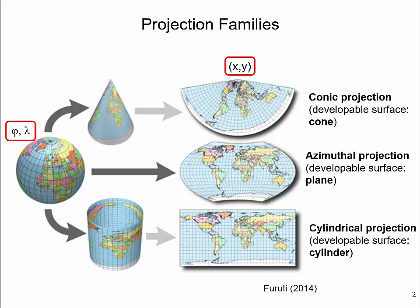Correspondingly, projection families can be grouped into conic, azimuthal, or cylindrical. Dark grey arrows in this figure indicate coordinate transformations that introduce map distortions during the map projection process. As can be seen, map distortion occurs for all projection families and cannot be avoided.